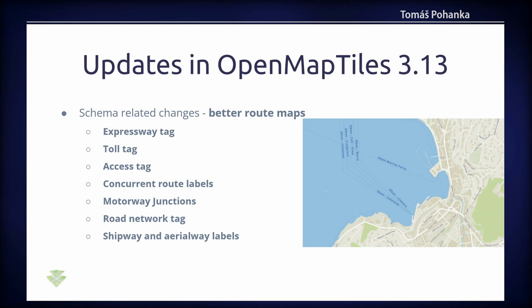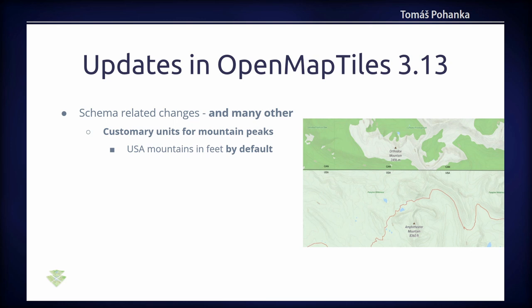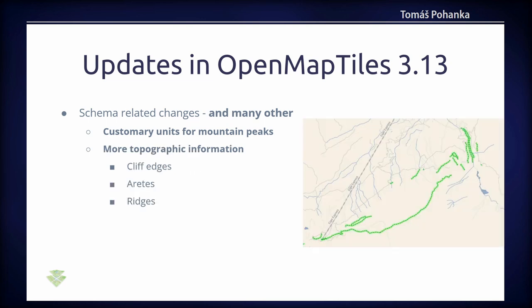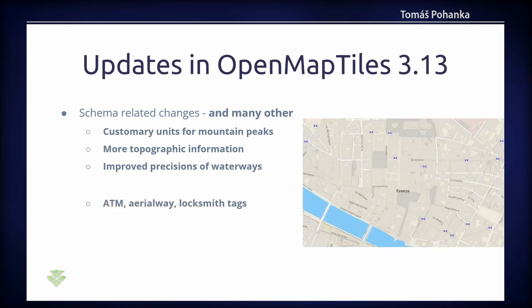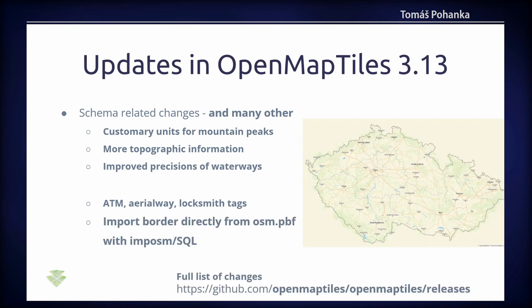There are also many other improvements. For example, you can use custom units for mountain peaks — in the USA, you can default to feet for height. There is addition of more topographic information, improved precision of waterways with a switch from Natural Earth to OSM data, and addition of new tags. One of the big changes is that we previously used Paul Norman's OSM borders for importing administrative borders, but now they are imported directly from the PBF in the import OSM step.